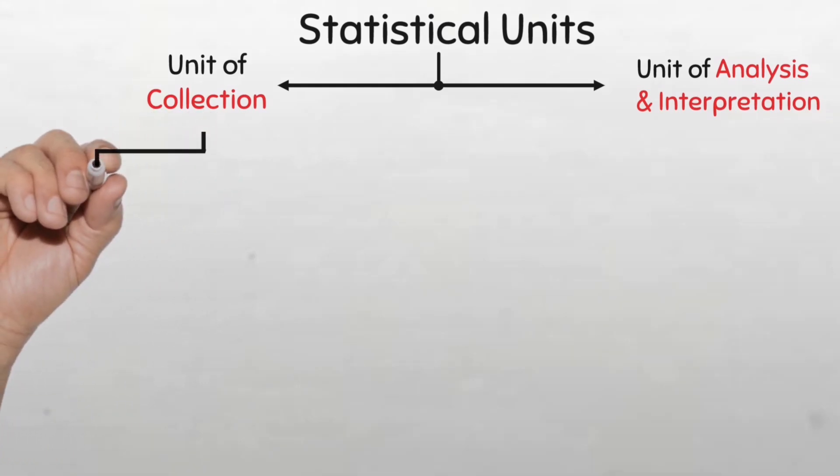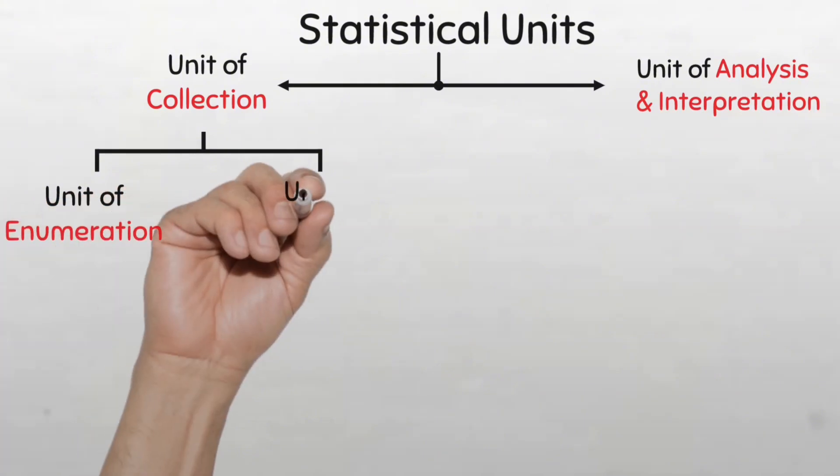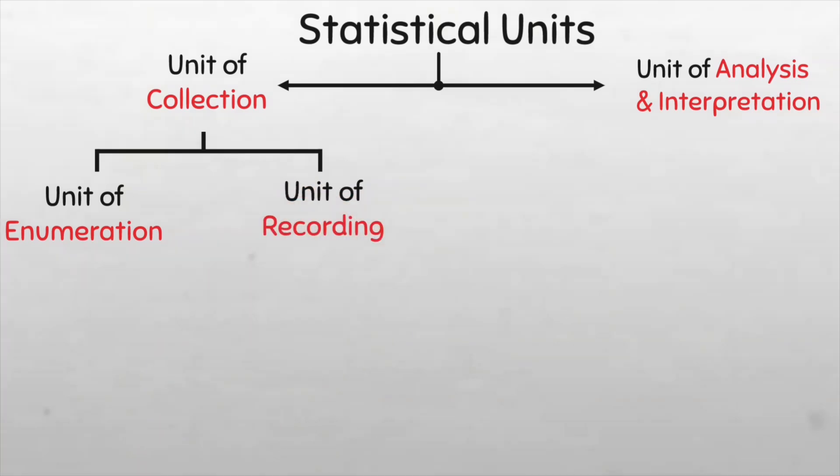The unit of collection can further be divided into two depending on how the data is collected. So we can have a unit of enumeration if the data is collected from counting or a unit of recording if some particular measurement is obtained from the unit.